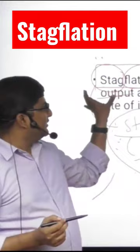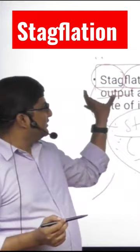So, stagflation means there will be stagnation of the output and unemployment in the economy as well as very high inflation. There will be three things: stagnation in the economy, unemployment in the economy, as well as high rate of inflation.